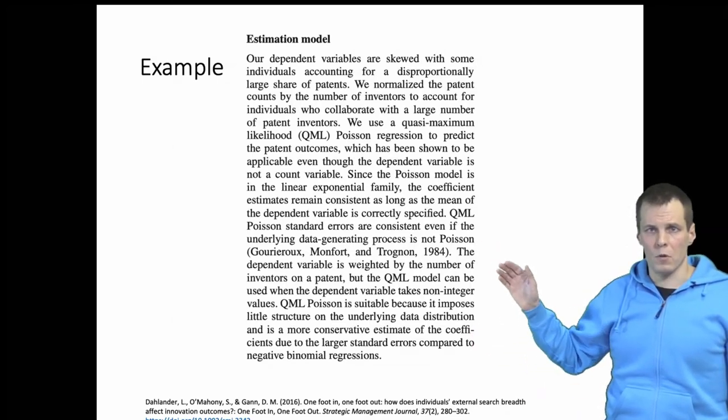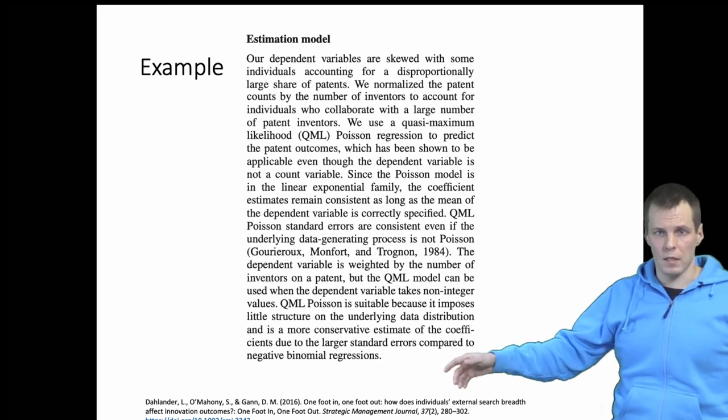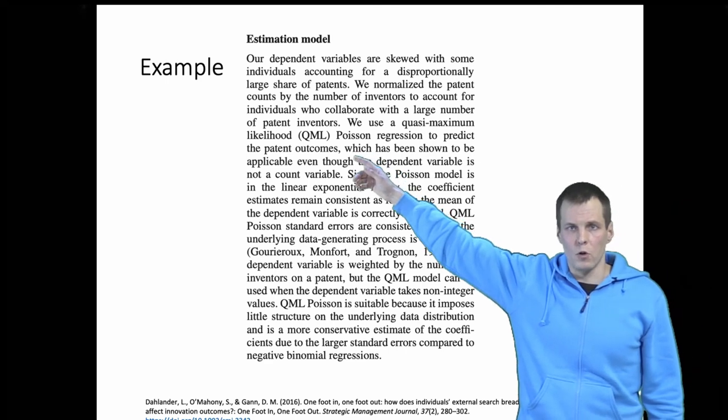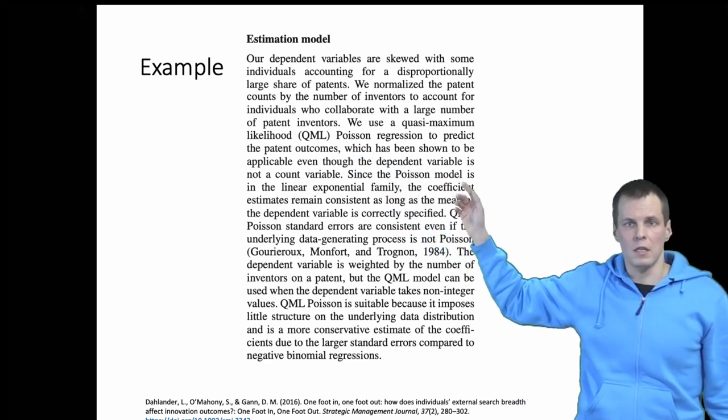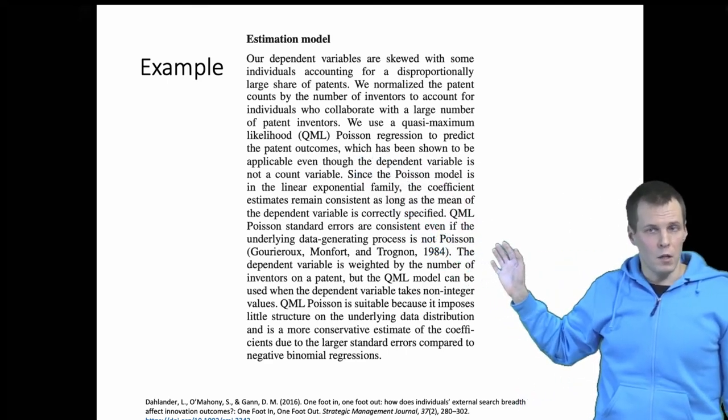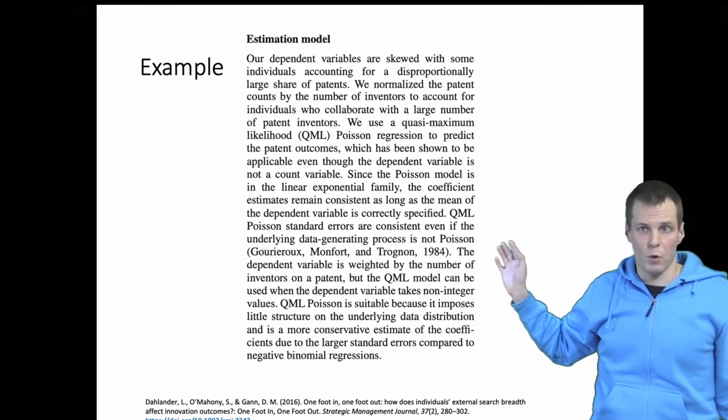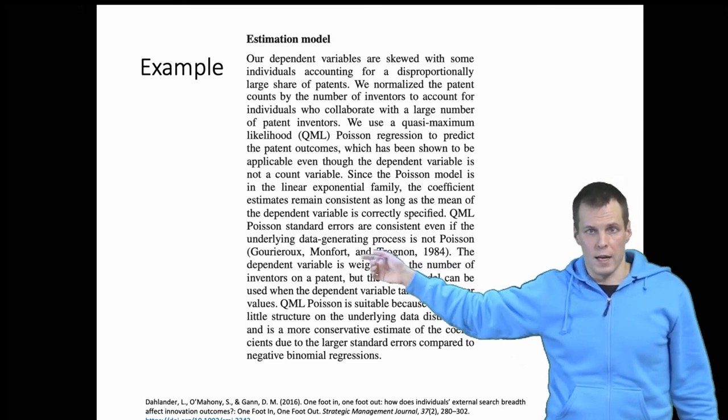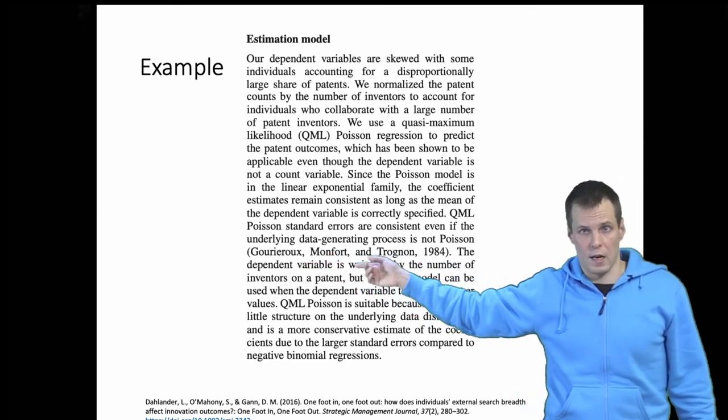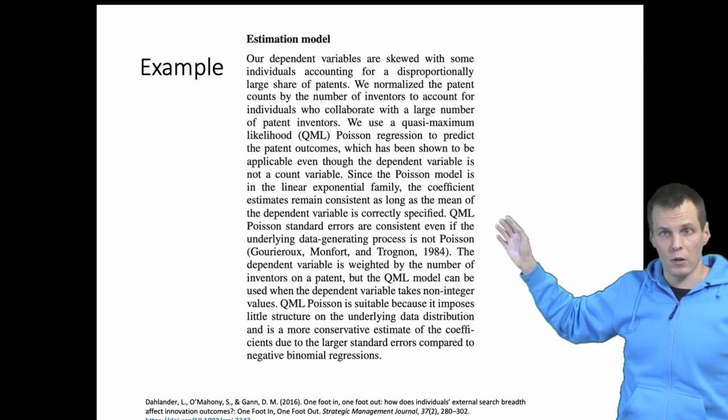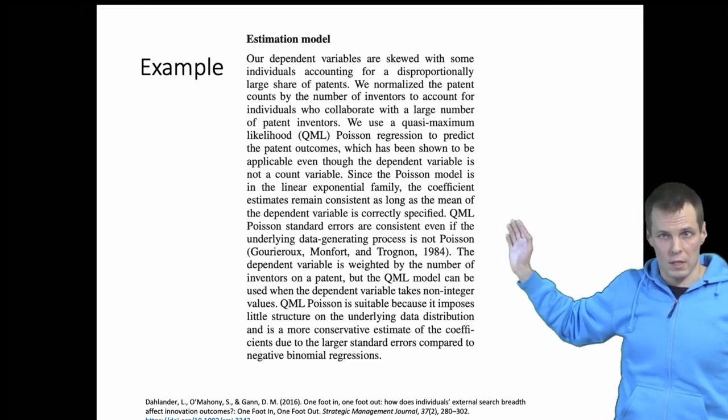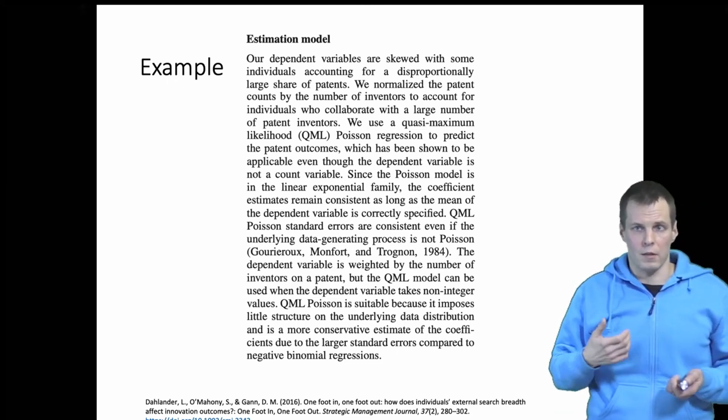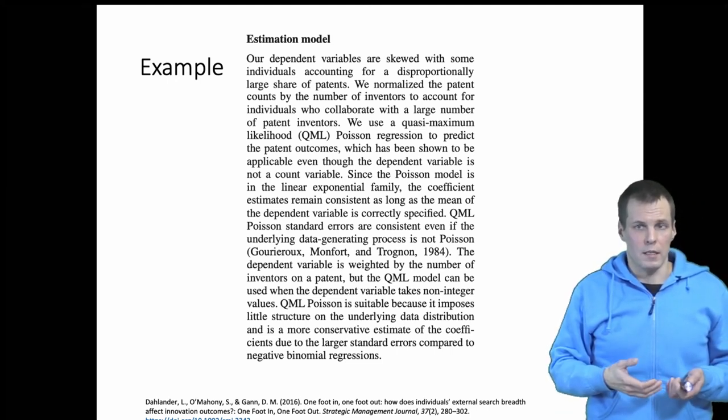But here's an example so we can see that in this paper 2016 they say that they use quasi-maximum likelihood Poisson regression analysis and they explain that you can use it even if the dependent variable is not a count and there is no problem with that and they cite a paper 1984 that provides a proof that that's actually the case. So this is a pretty good explanation that you can use as an example of how to convince your reviewers that using a quasi-maximum likelihood estimator is a good idea.